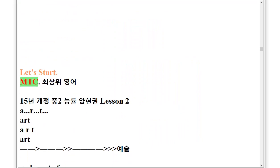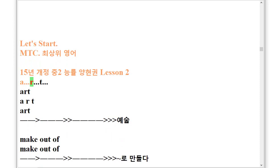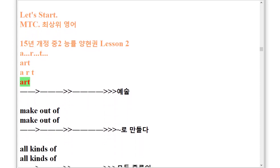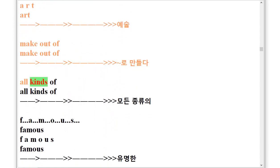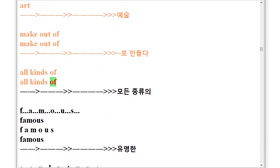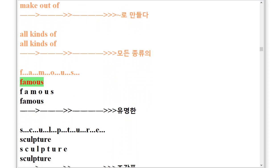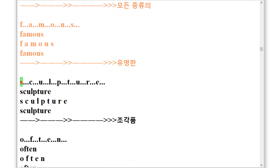M.T.C. 152 Lesson 2. A.R.T. Art. Art is made out of all kinds of things. F.A.M.O.U.S. Famous.